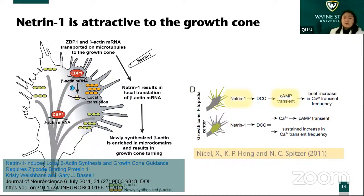From textbooks we already know that netrin-1 is very important for a growth cone. The core second messenger for this movement is cyclic AMP.